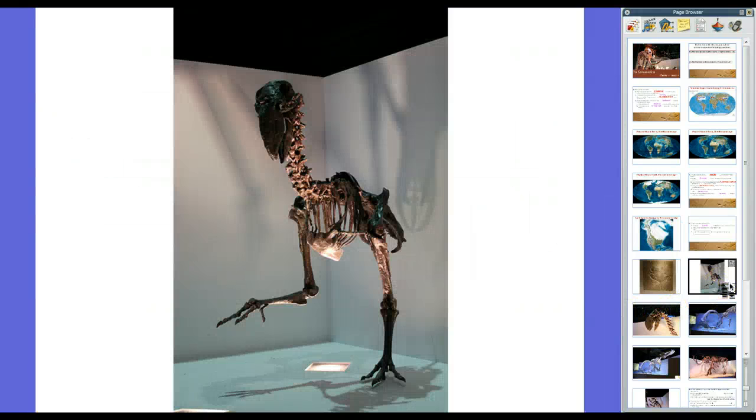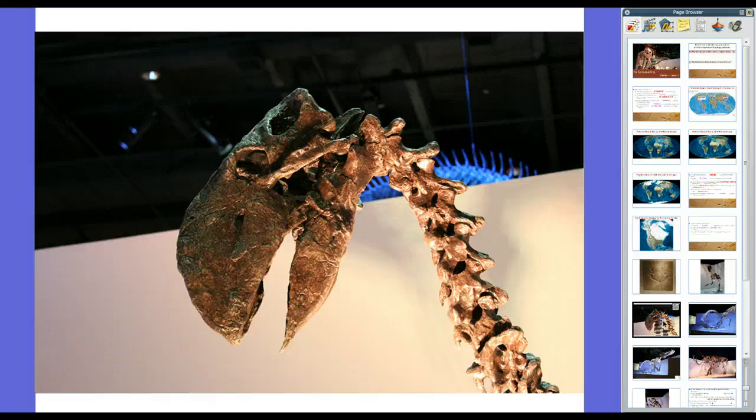This is what we would call a terror bird. Yeah, it's like a three-meter-tall predatory ostrich. And here's a close look at its beak. They dominated, initially, birds in the immediate aftermath and until mammals came that took over. And then they gave up their position to mammals.